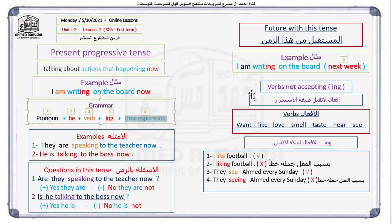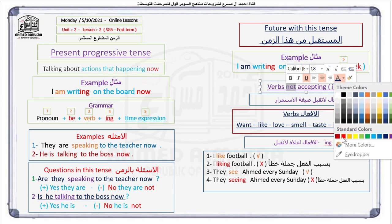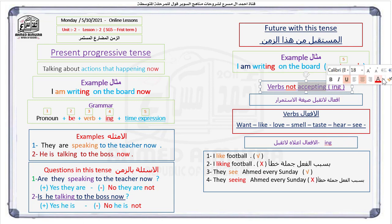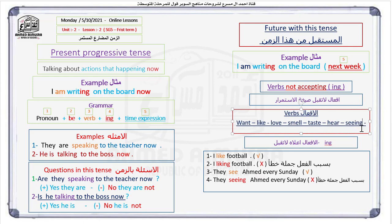The last topic for today is verbs not accepting the -ing. Please pay attention. These verbs are related to the senses and are used with the simple present tense, not the present progressive. They are: want, like, love, smell, taste, hear, see. You cannot say 'seeing' — that is wrong in English. These verbs do not take -ing.